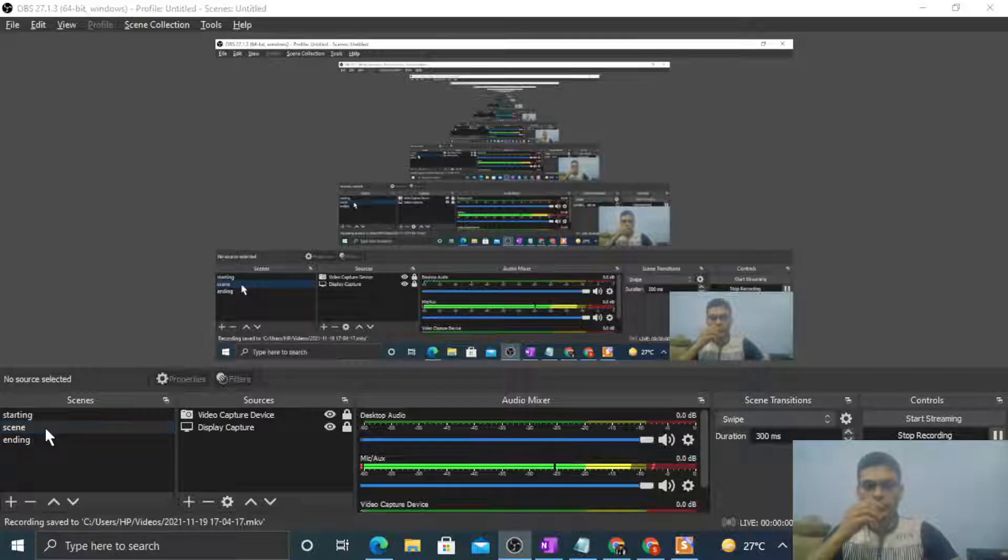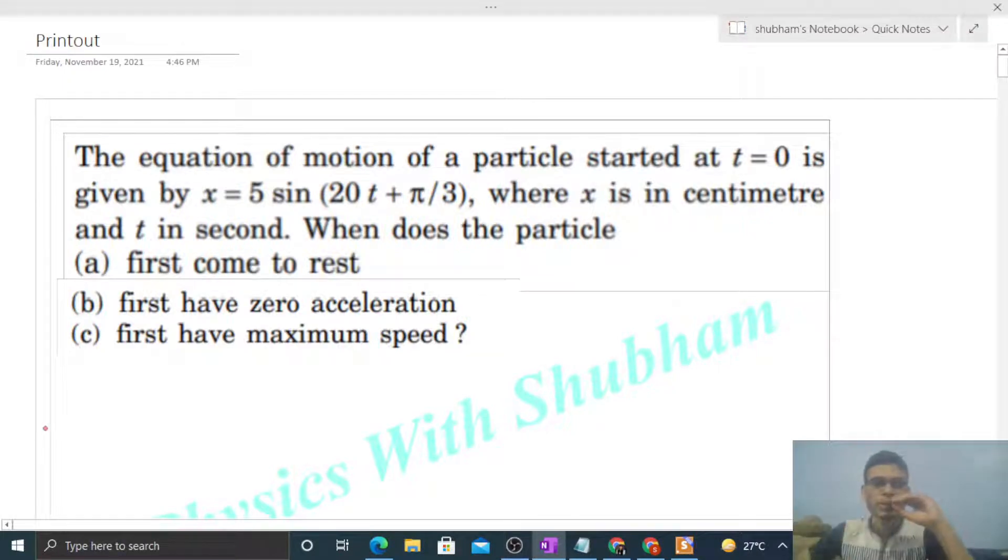Hi everyone, today let's discuss this interesting problem. The equation of motion of a particle started at t = 0 is given by x = 5 sin(20t + π/3), where x is in centimeters and t in seconds. When does the particle first come to rest, first have zero acceleration, and first have maximum speed?